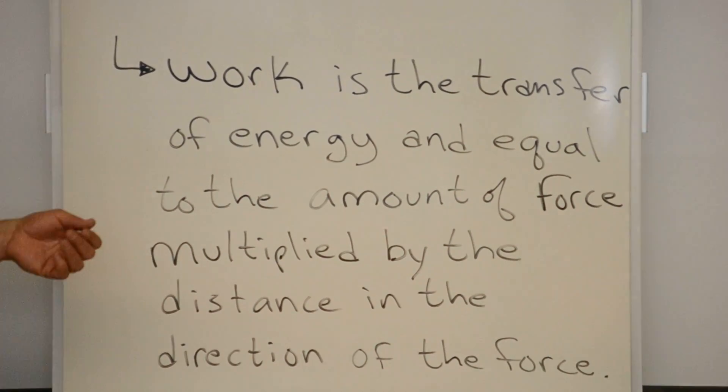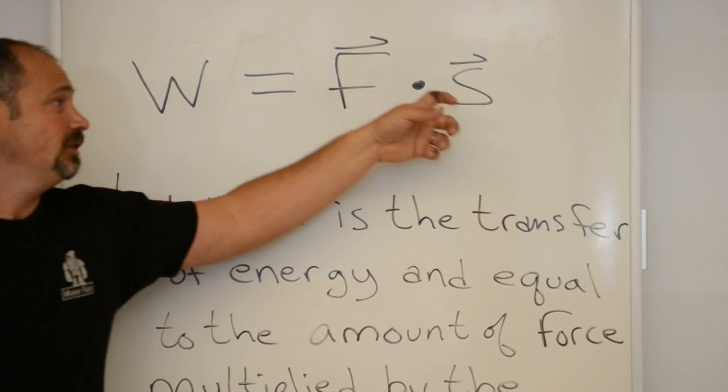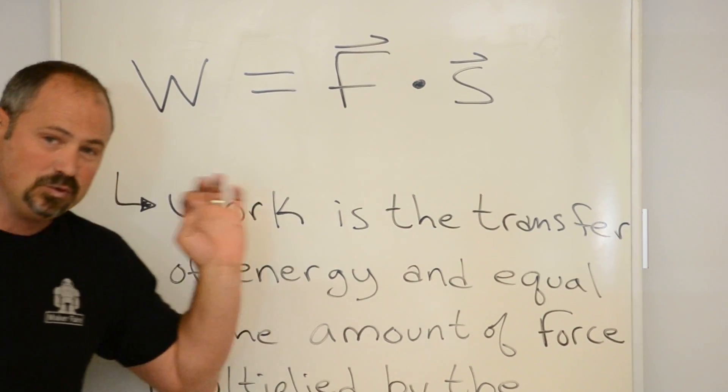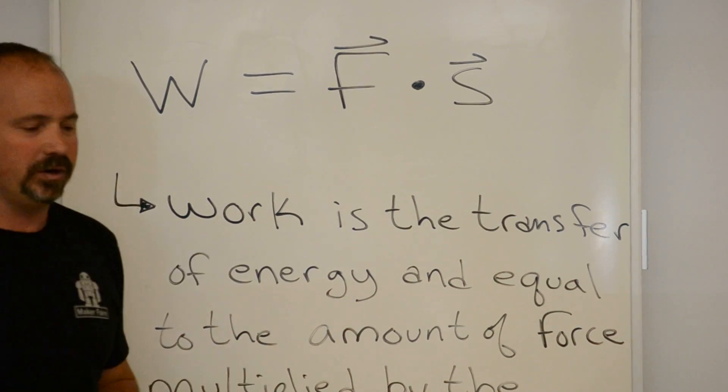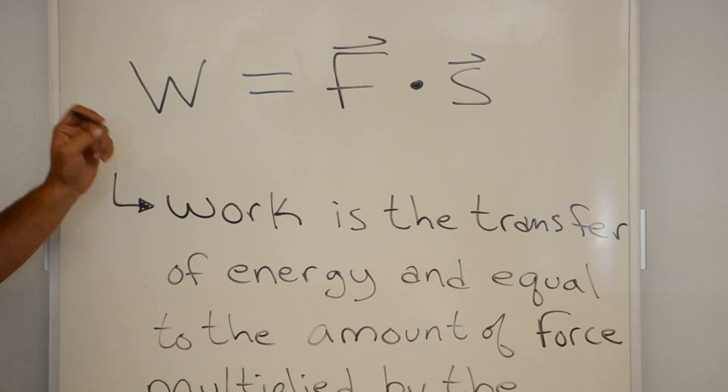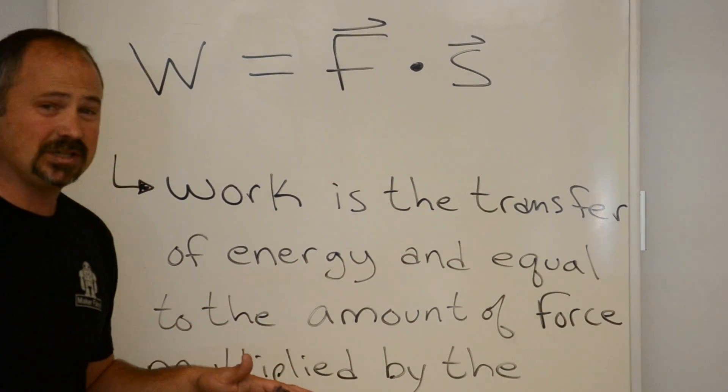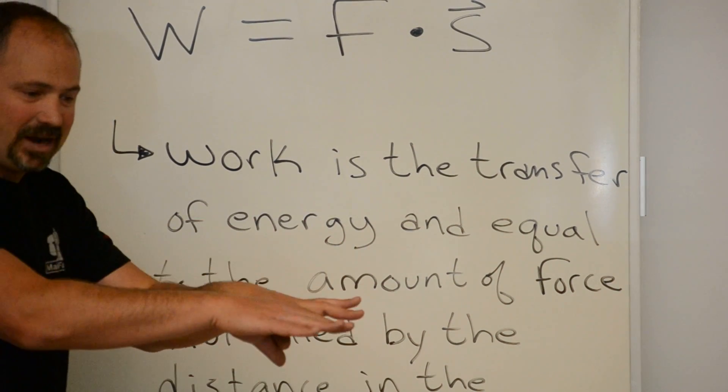So in physics we define work as the dot product of the force vector and the distance vector. If you don't know what a dot product is, don't worry. It's very simple. It's simply telling you that the work is equal to the component of force times the component of distance in the same direction.